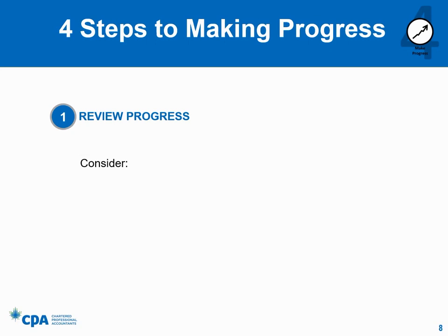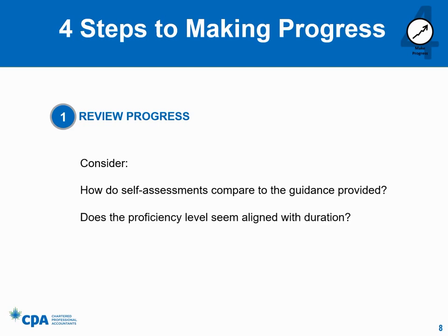Once you have reviewed the future CPA's progress as documented in the PERT, you will want to consider a number of factors, including how the future CPA's self-assessments compare to the detailed guidance provided in the PERT, and whether the self-assessed proficiency levels seem aligned with the overall duration. For example, does it seem unreasonable that the future CPA has developed so many competencies at a level 2 in such a short time? Or, conversely, would you expect the future CPA to have developed more competencies at a higher level given a longer duration? You will also want to consider what the implications are of any gaps in development. If the future CPA is not getting adequate exposure to the competencies, you might need to provide specific guidance.